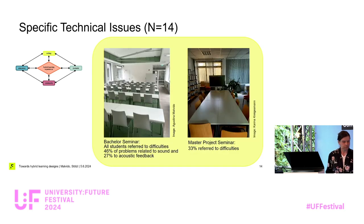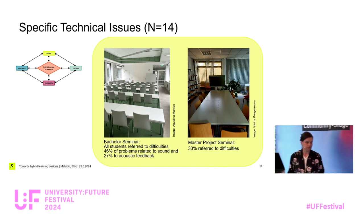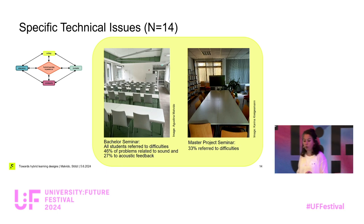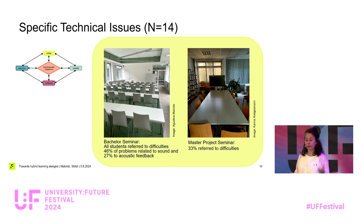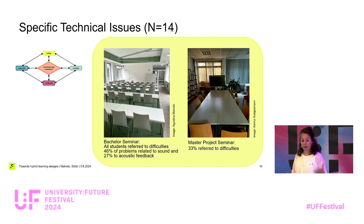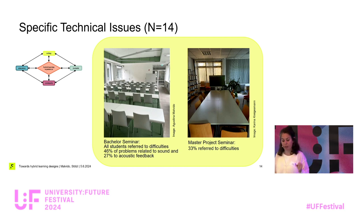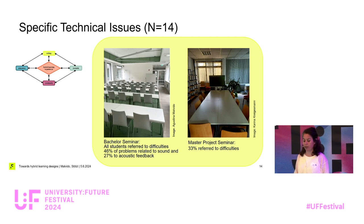When we asked about disturbing specific technical issues, we got 14 answers. These are the two rooms where the classes on-site took place. In the bachelor's seminar, all students in that room referred to technical difficulties, and most of them referred to the sound — the speakers, the microphone, or acoustic feedback. Whereas in the master project seminar, only around a third of students referred to difficulties. The obvious question is: what was different between these two rooms?